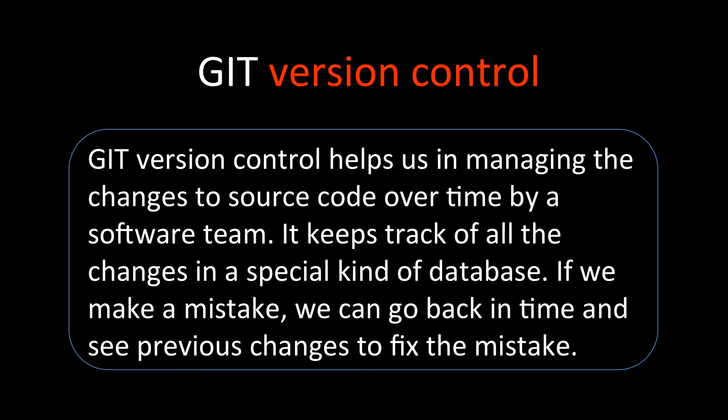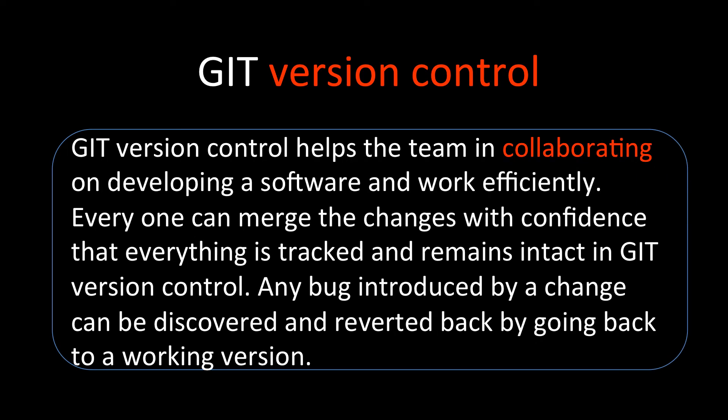If we make a mistake and we want to go back in time to see what the previous version was, we can fix the mistake by looking at the previous version — that is the version control provided by git. It also helps the team in collaborating, so whenever they are working on multiple features or a big project where everybody has their own responsibility, they can keep doing their own work and keep merging the changes with confidence that everything is tracked and version control is intact.